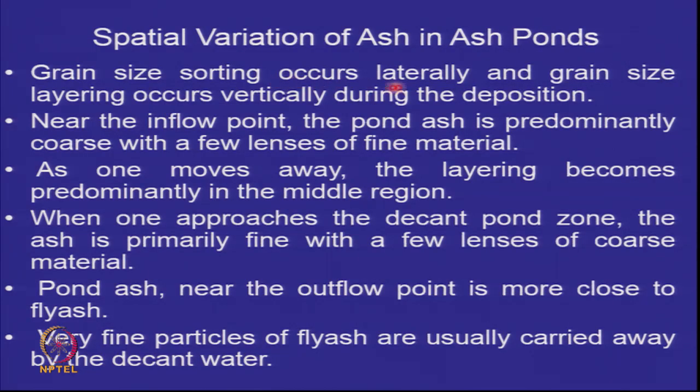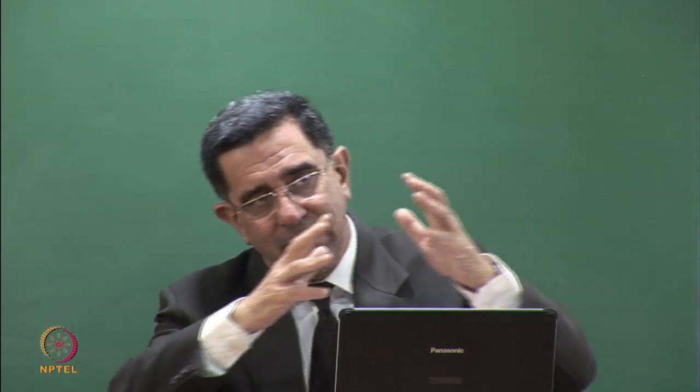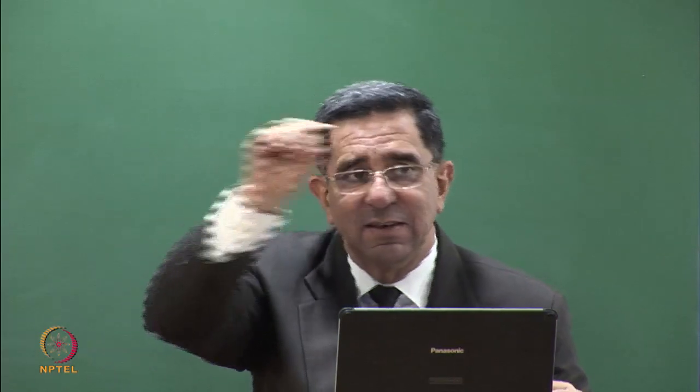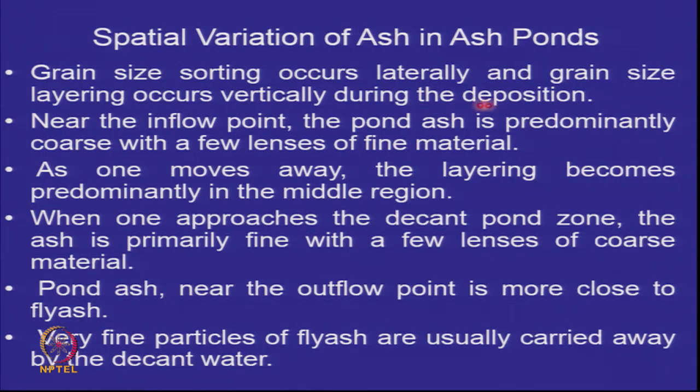There is spatial variation of ash in ash ponds: grain size sorting occurs laterally and grain size layering occurs vertically during deposition. Two things happen simultaneously: the slurry moves from inflow to outflow, with coarser particles settling first laterally, and within a single location, coarser particles settle first vertically — similar to what happens in the hydrometer test. So digging through ash reveals layers of coarse ash and fine ash, because coarse particles settle before fine ones with each load deposited.